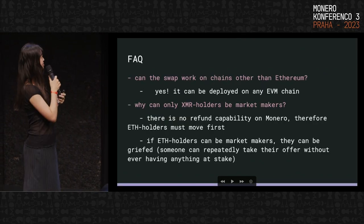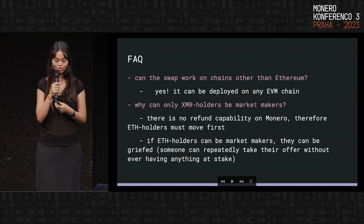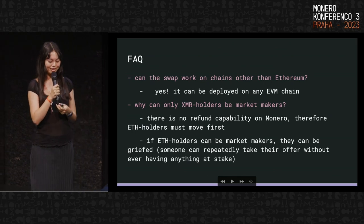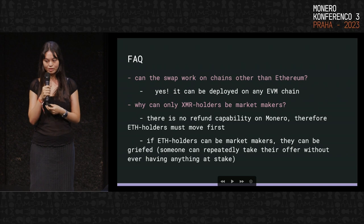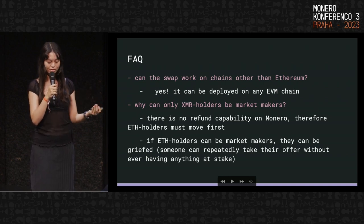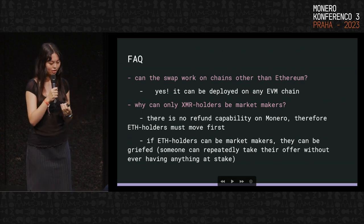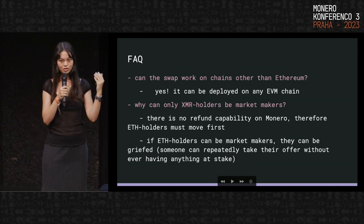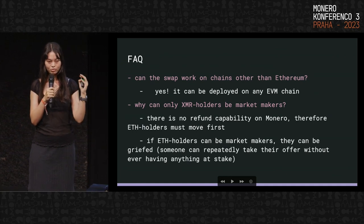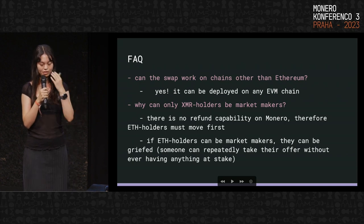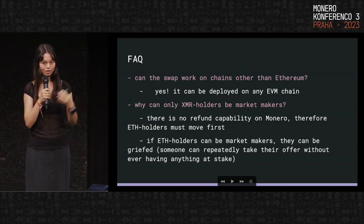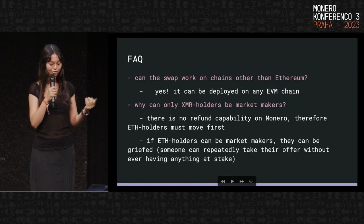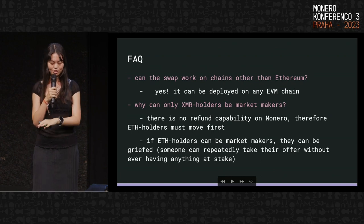A commonly asked question: can the swap work on chains other than Ethereum? Yes — it can be deployed on any EVM chain. There's a smart contract that you can deploy on any EVM as-is. But also if you wanted to deploy it on a non-EVM chain, you could rewrite the contract in whatever smart contract language that chain supports. Right now there's only the ETH Solidity implementation, but you could theoretically deploy it on any smart contract chain on one side, with Monero on the other side.